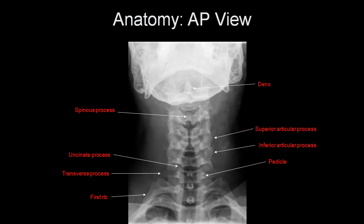On the AP view, you can see the dens projecting over the mandible, the spinous processes, the uncinate processes of the vertebral bodies — these pointy structures — the transverse processes, the superior and inferior articular processes, the pedicles which are round, and the medial aspects of the first few ribs. Remember again, when counting vertebral bodies, the first fully formed vertebral body you see is C2, not C1.